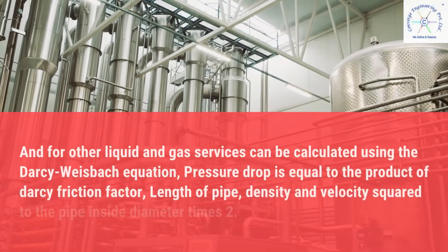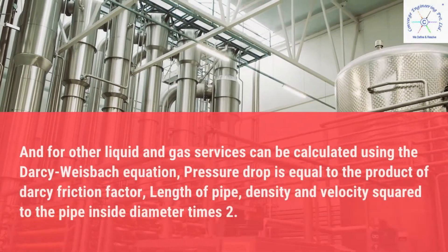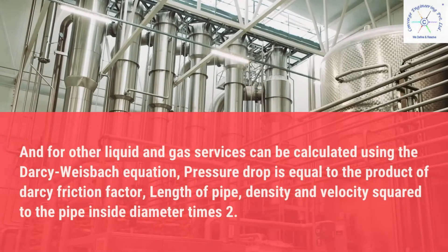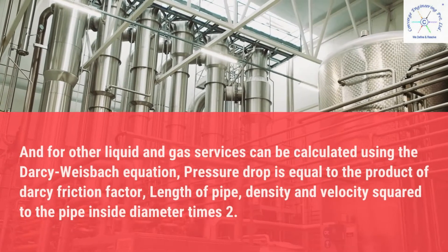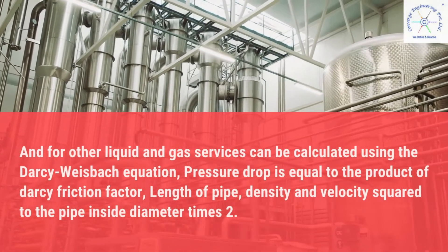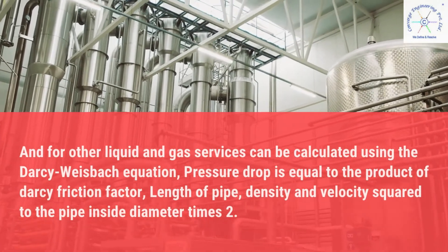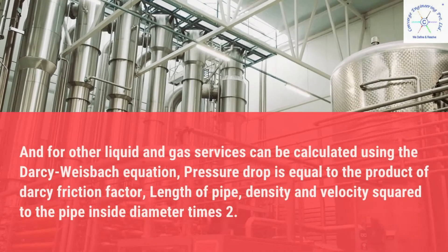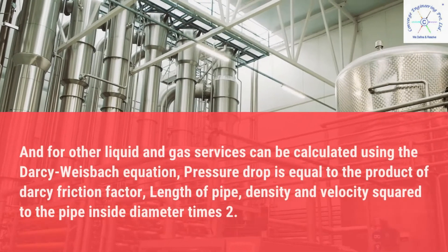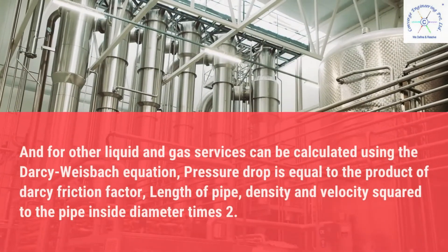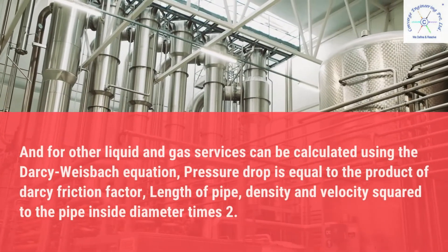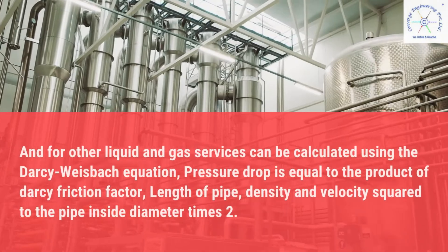For other liquid and gas services, pressure drop can be calculated using the Darcy-Weisbach equation: pressure drop equals the product of Darcy friction factor, length of pipe, density, and velocity squared, divided by pipe inside diameter times 2.